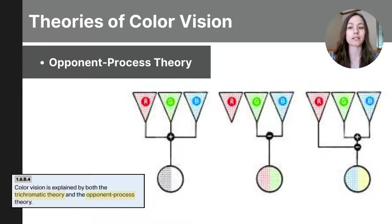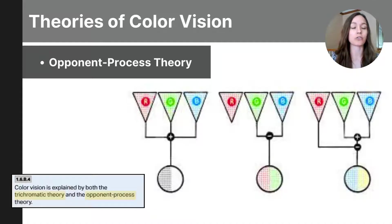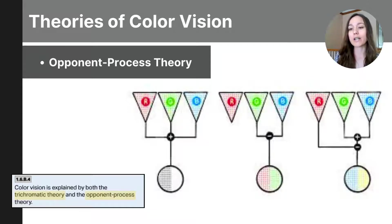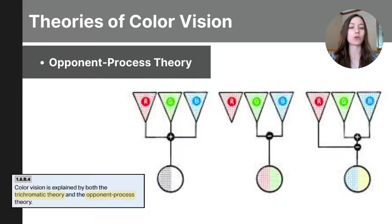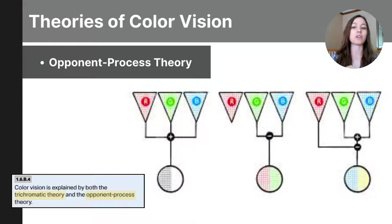The opponent process theory explains how our brain processes color after the cones detect it. For the red versus green channel, the brain compares signals from red-sensitive and green-sensitive cones — when one is active, it makes the other seem less noticeable. So if a red cone is more active, it will be perceived as red, not green. For blue-yellow, the brain compares blue-sensitive cones with a mix of green and red-sensitive cones, creating a contrast between blue and yellow. When one is more active, it makes the opposing color seem less noticeable.